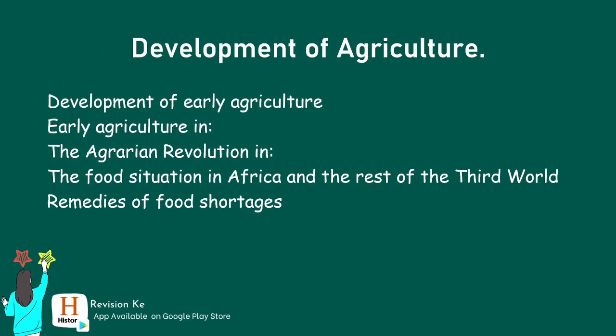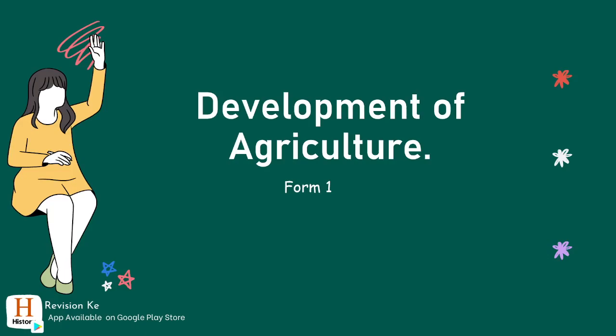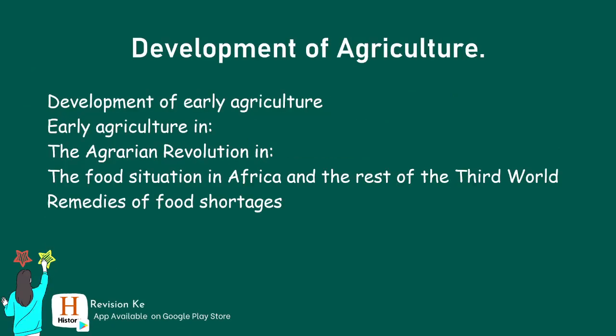Having understood that, we're going to look at the third objective of this topic: describing the agrarian revolution in Britain and the USA. We're also going to identify the causes of food security and the food situation in Africa and the rest of the third world.